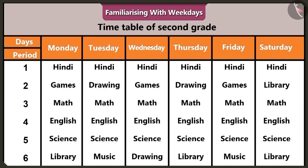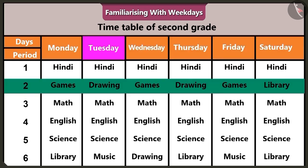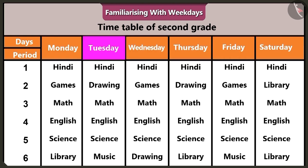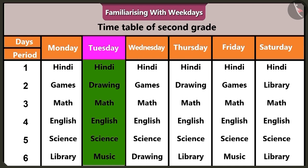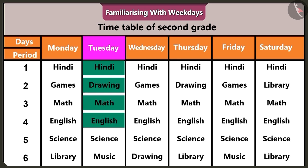Hey, where are you looking? Tuesday is the second day of the week, so I am looking at row number two. Chotu, you have to keep the books for Tuesday, right? Look, in this timetable the days from Monday to Saturday are written. Tomorrow is Tuesday, so we have to look at the subjects written in Tuesday's column. Here are the subjects: Hindi, Drawing, Mathematics, English, Science and Music are mentioned in Tuesday's column.